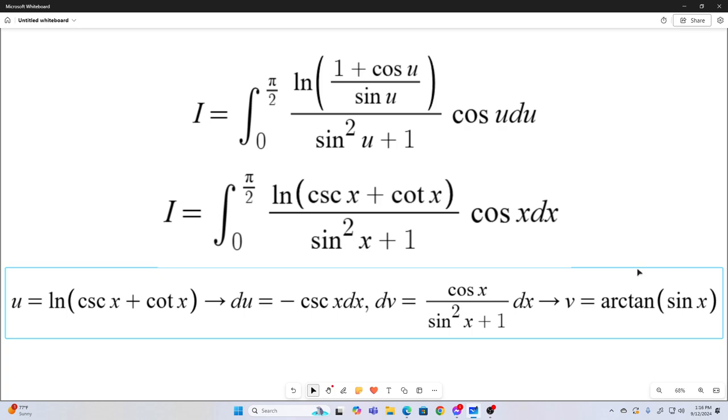We'll let our u equal this natural log cosecant x plus cotangent x, giving us du is equal to negative cosecant x dx. And our dv is the rest of it, cosine x over sine squared x plus 1 dx, implying that our v is the arctangent of sine x.